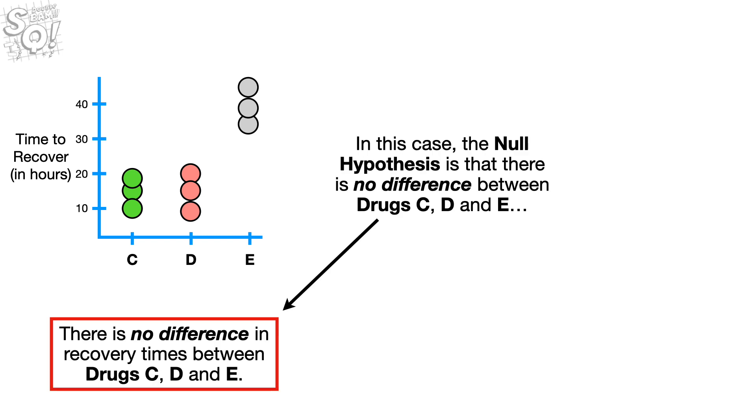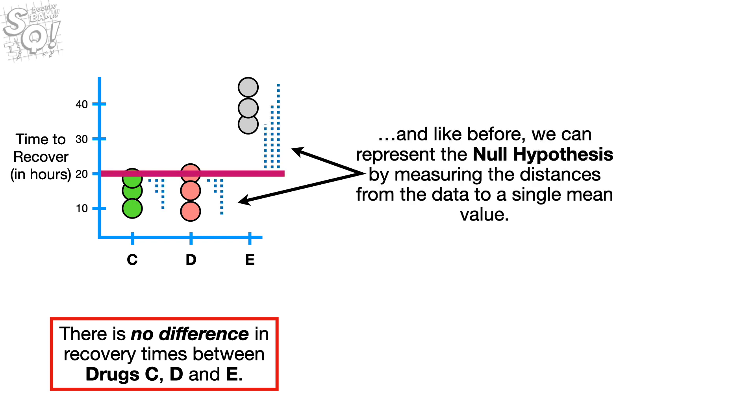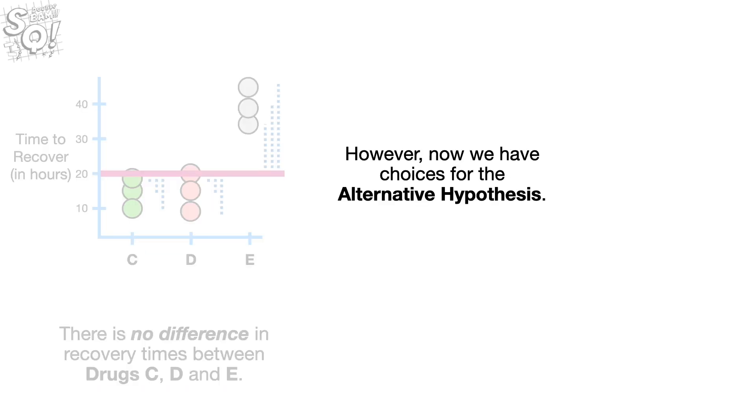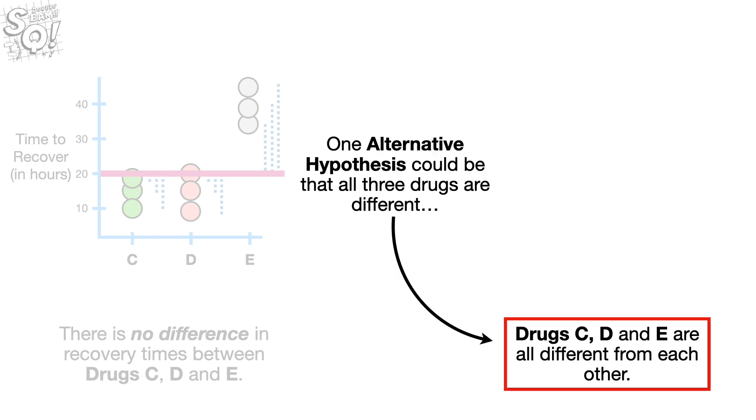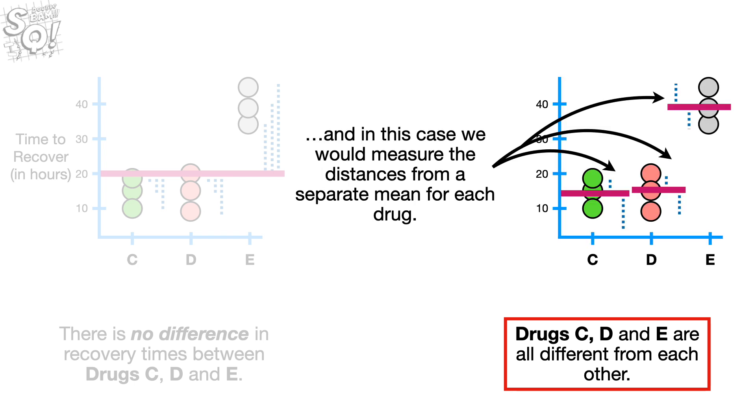In this case, the Null Hypothesis is that there is no difference between drugs C, D, and E. And, like before, we can represent the Null Hypothesis by measuring the distances from the data to a single mean value. However, now we have choices for the alternative hypothesis. One alternative hypothesis could be that all three drugs are different. And, in this case, we would measure the distances from a separate mean for each drug.